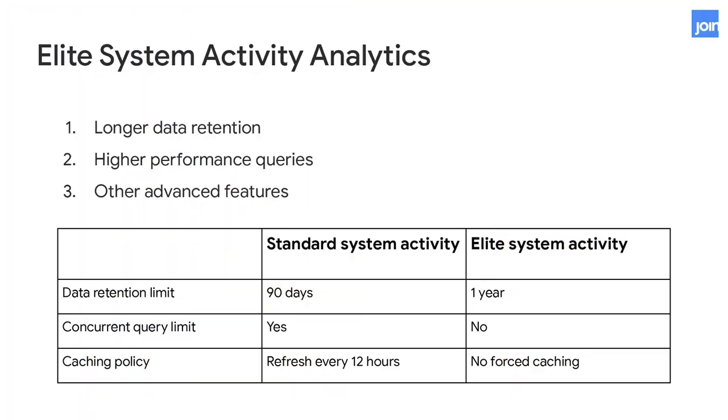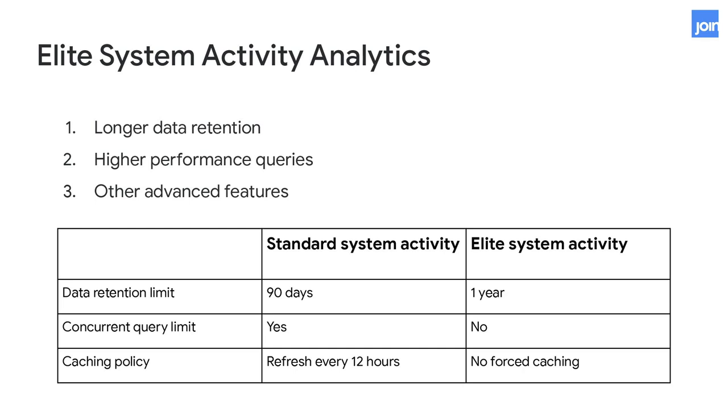System activity comes in essentially two flavors. Everyone has access to these explorers and dashboards. But if you require longer data retention periods or you're spending a lot of time in system activity analytics and need greater performance, we offer Elite System Activity — a slightly higher performing, longer data retention version. If you're interested, simply reach out to your Looker customer success manager or sales team and they'd be happy to help you get it.